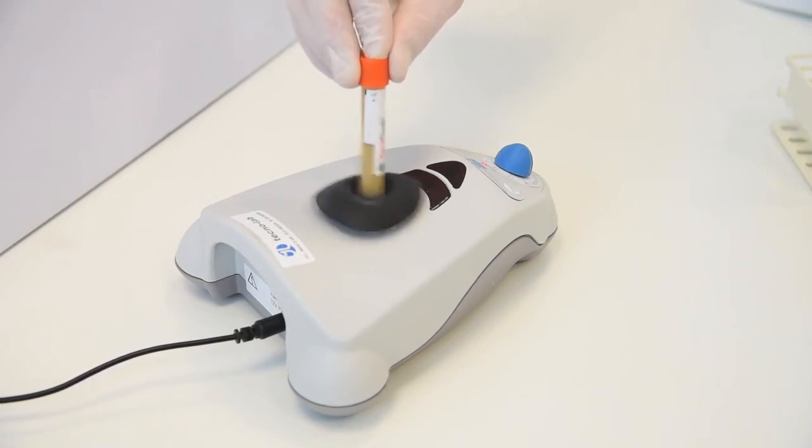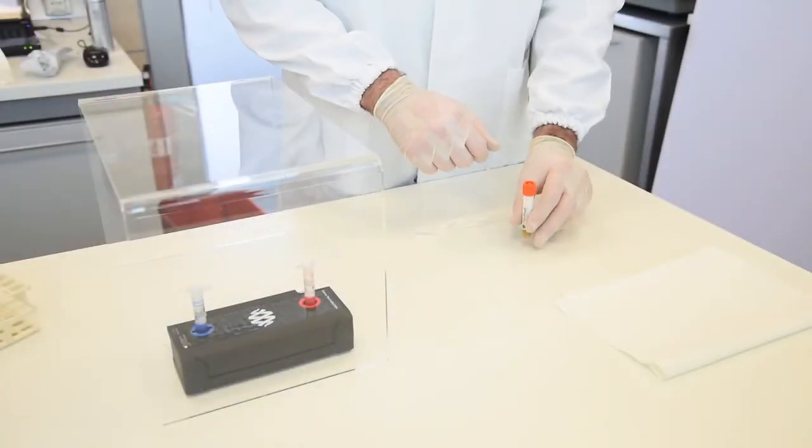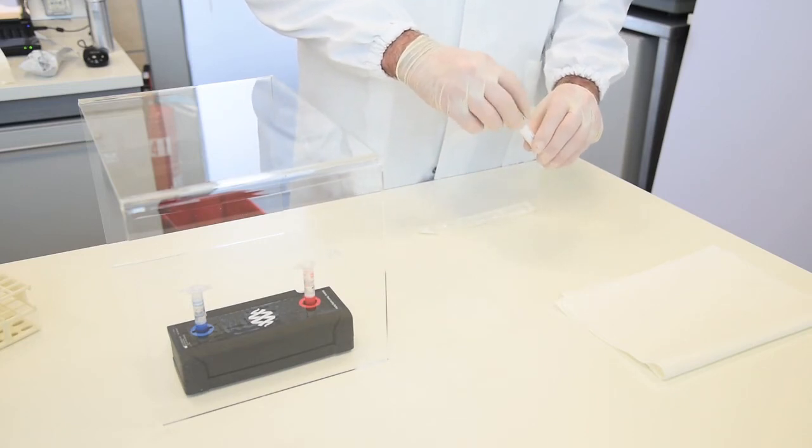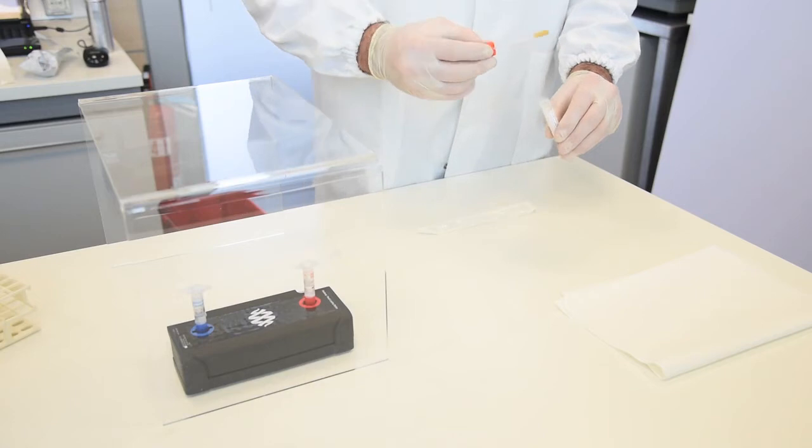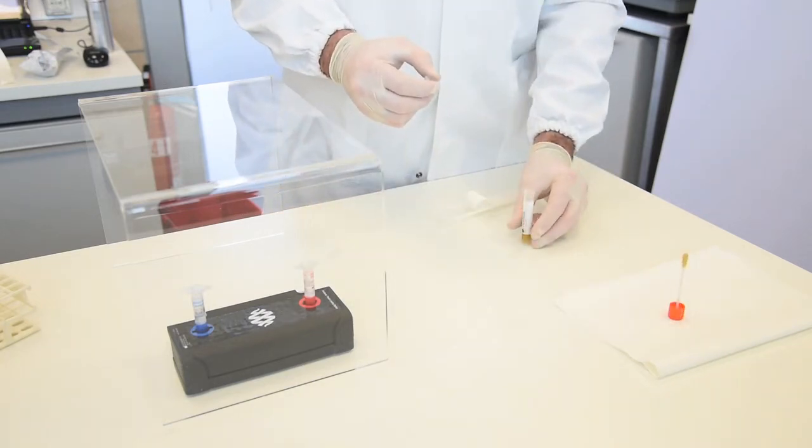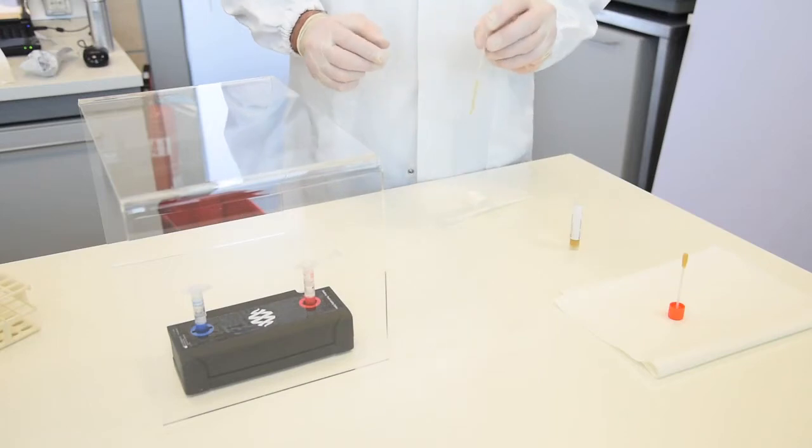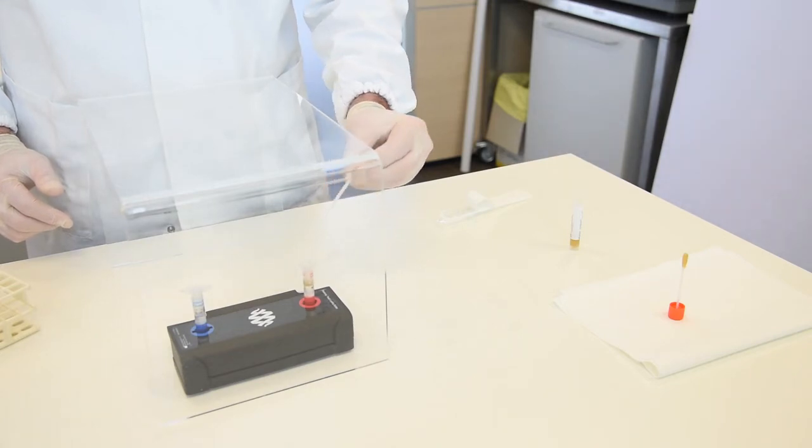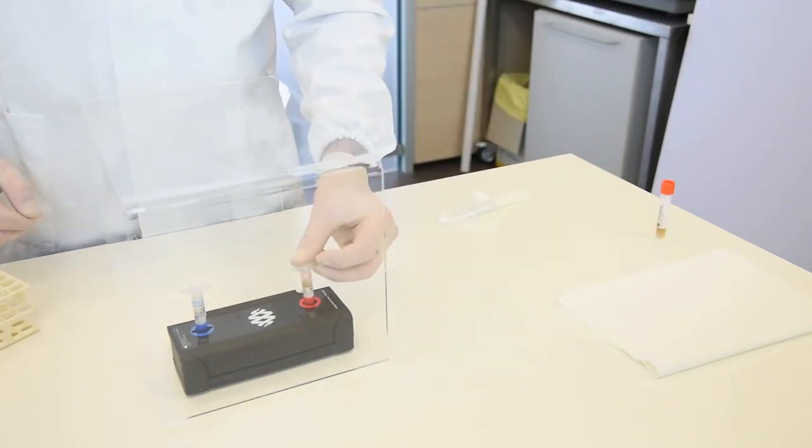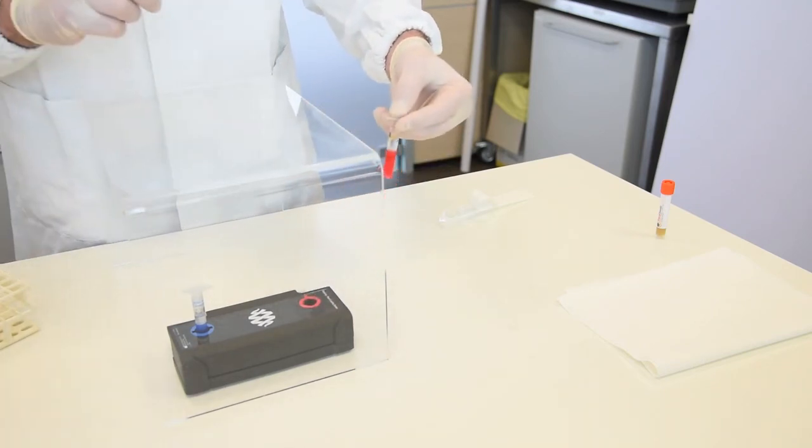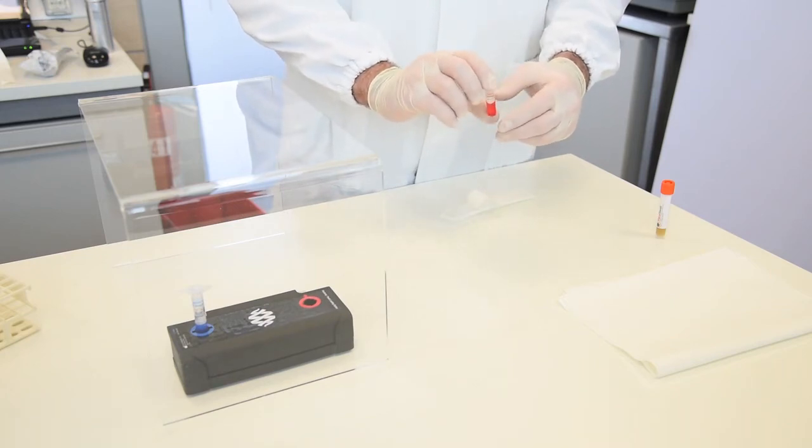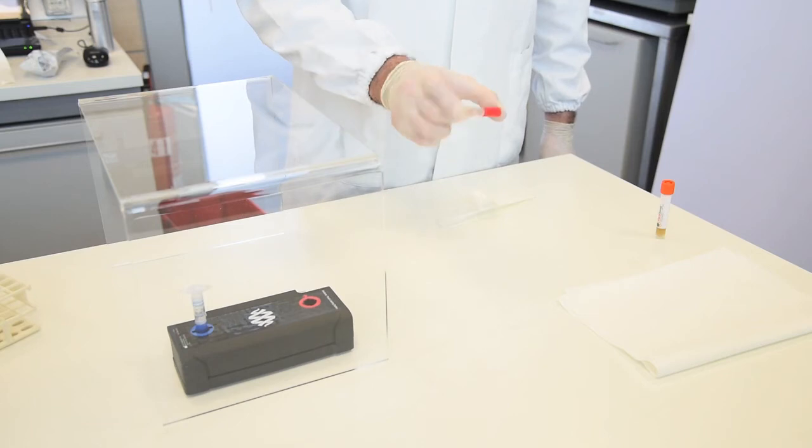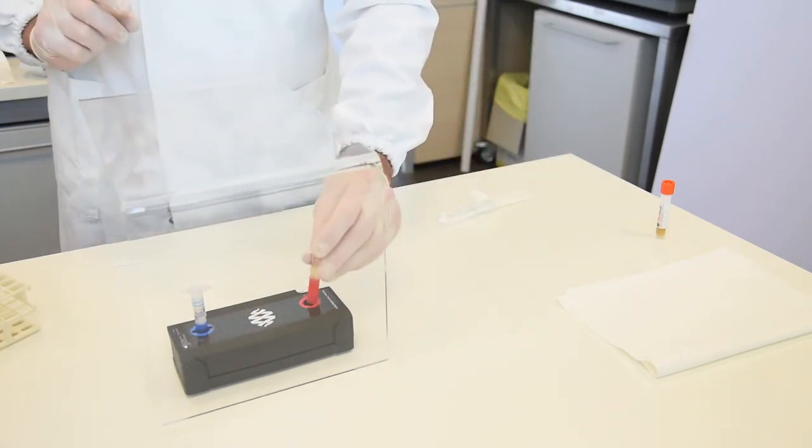Thoroughly mix stool specimen in transport media. Vortex fecal swab tube for 5 seconds. Remove cap and attach swab from fecal swab tube. Using transfer pipette, draw up specimen to second line. Add to sample injection vial. Tightly close lid of sample injection vial. Mix sample by gently inverting sample injection vial three times. Return sample injection vial to red well of pouch loading station.